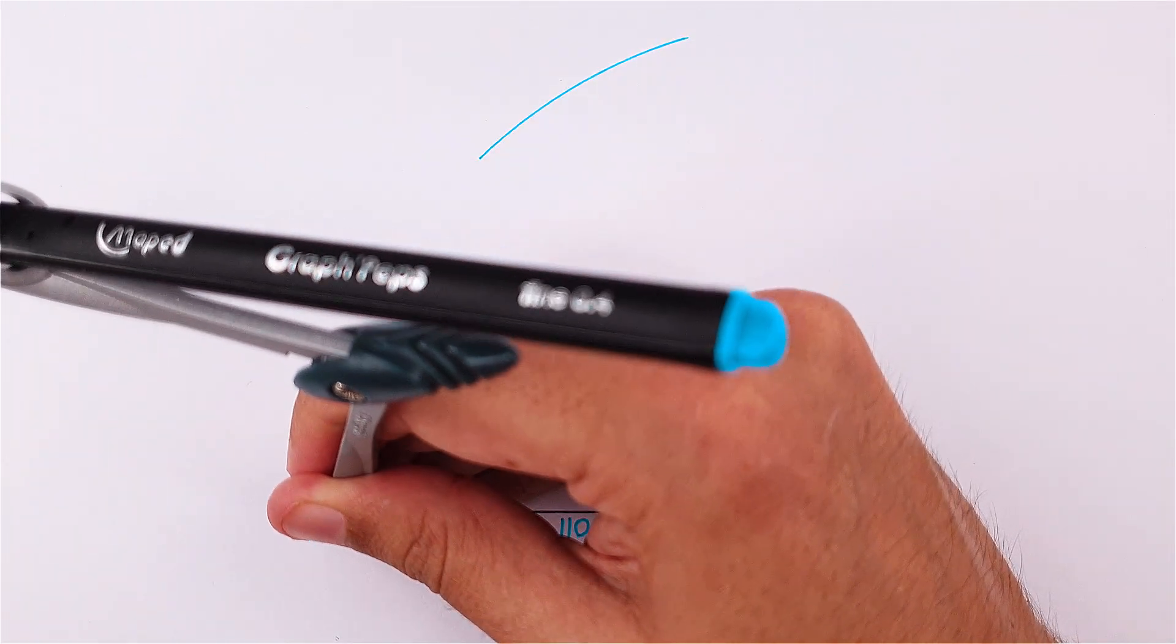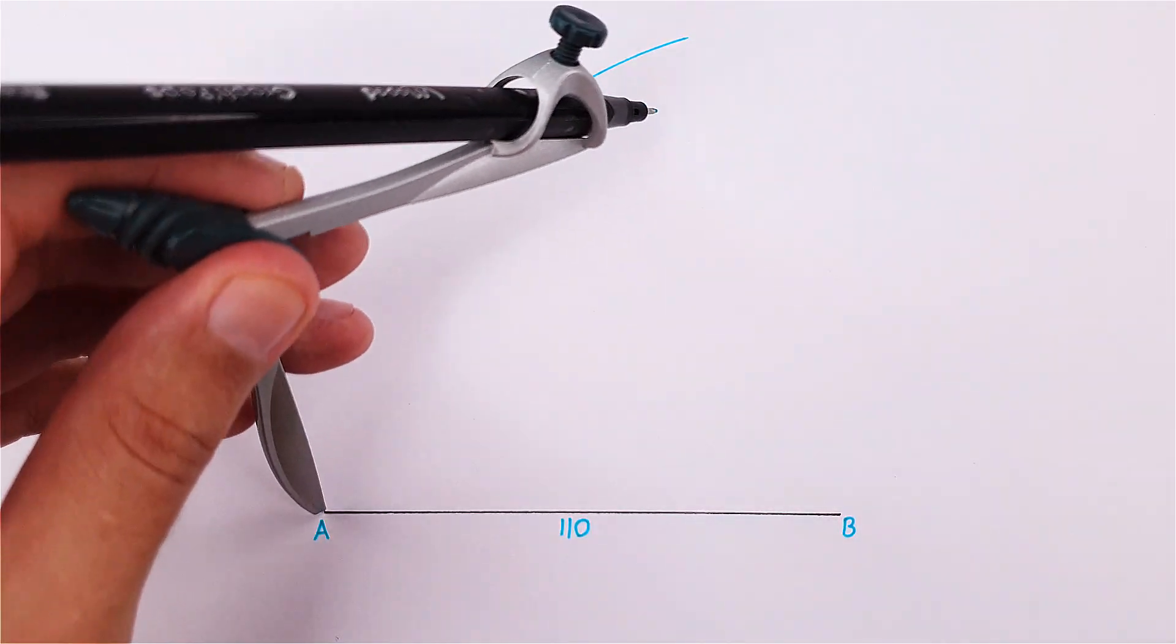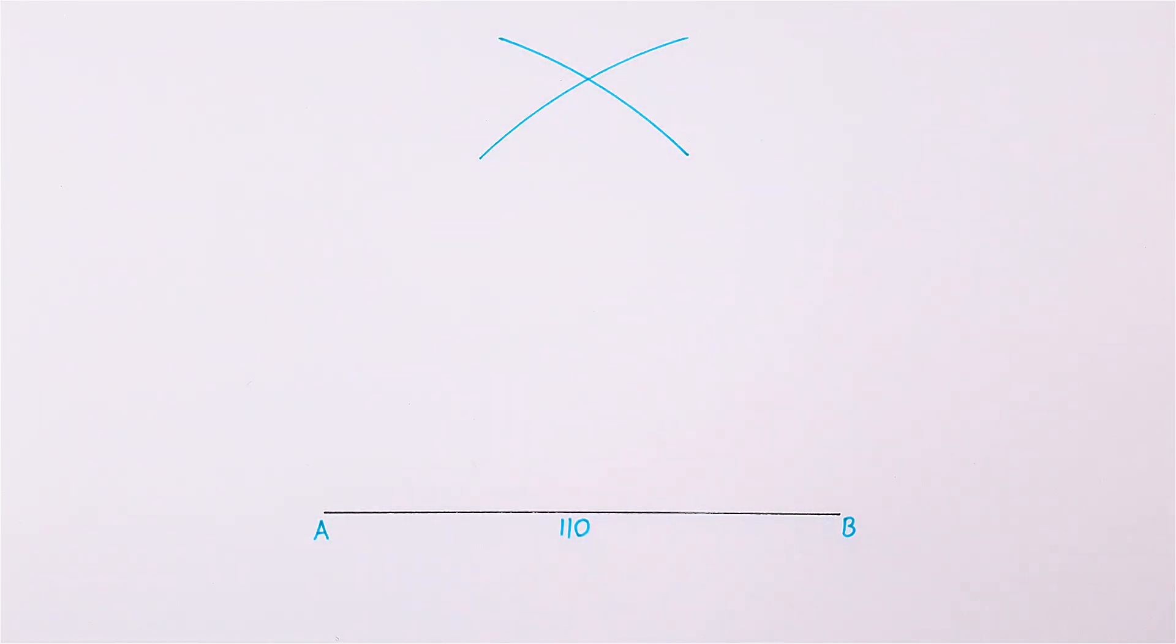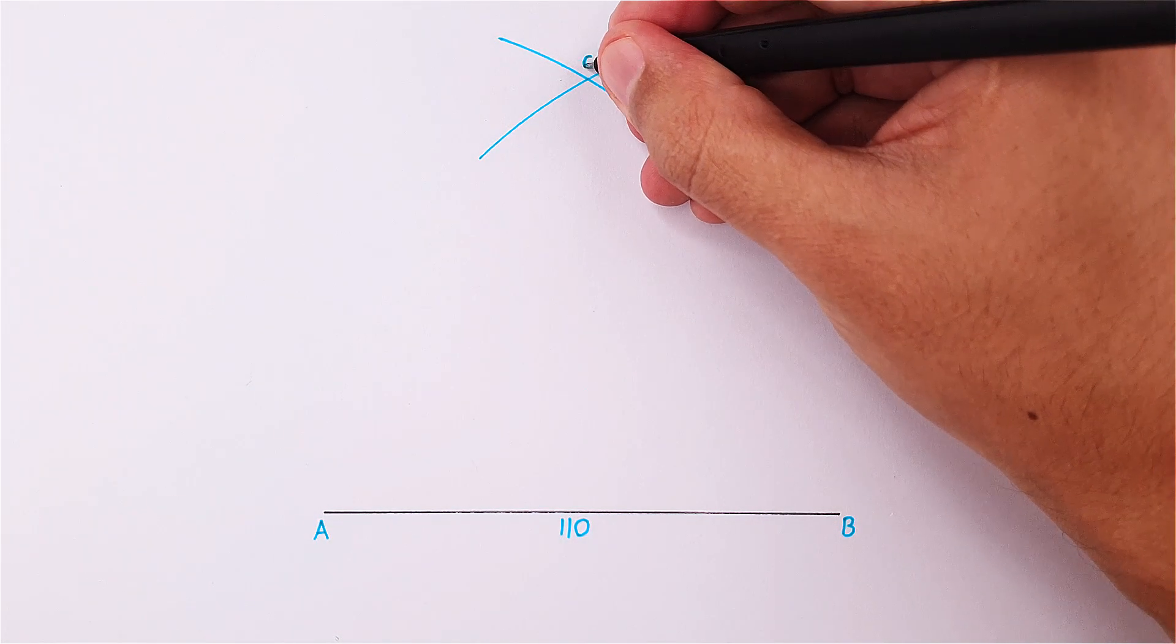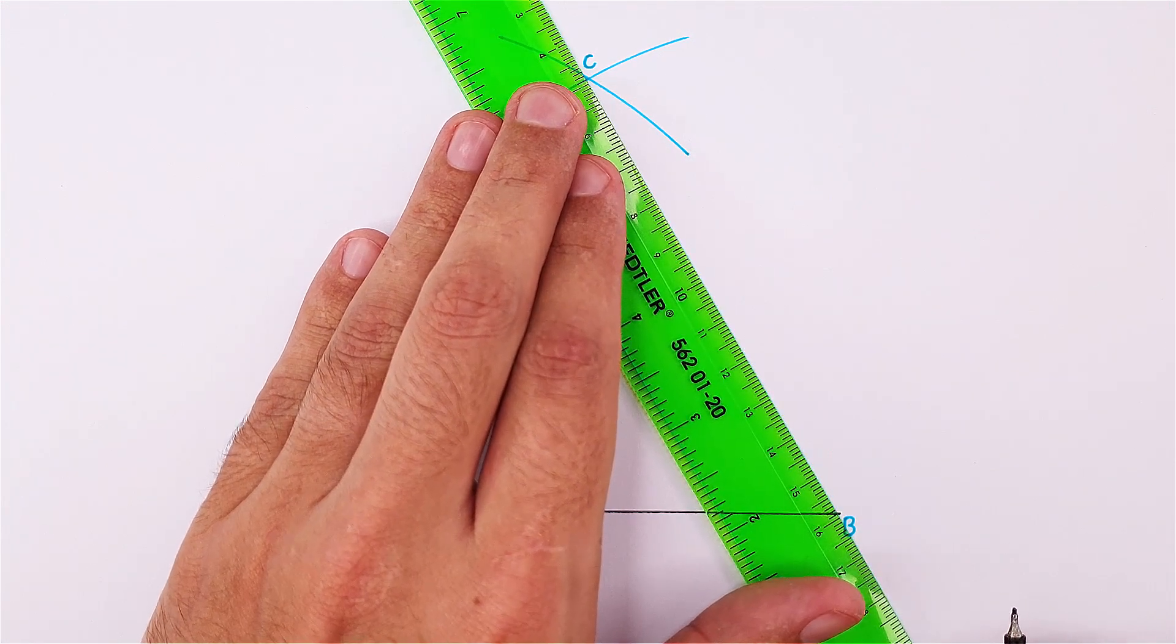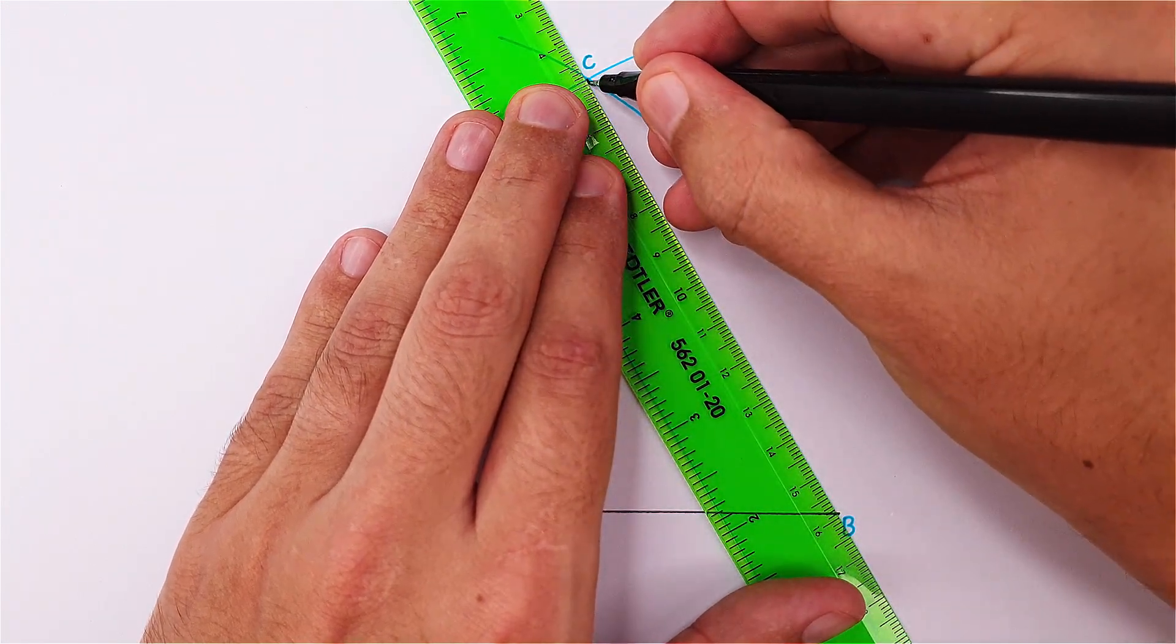Place your compass on point B, adjust it to point A and draw an arc above side AB. Repeat the same step from point A. Label the intersection as point C. Connect points A, B and C to form the triangle.